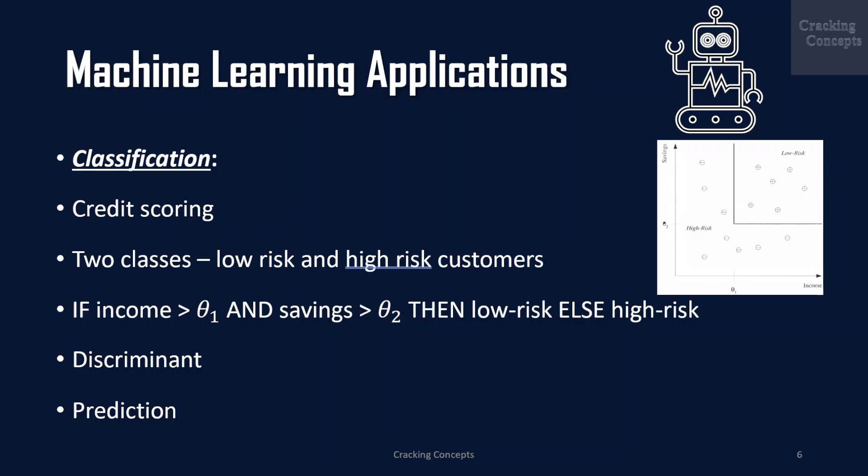Next we will look into classification. In credit scoring, the bank calculates the risk given the amount of credit and the information about the customer. Information about the customer includes data that is relevant in calculating his or her financial capacity, namely income, savings, collaterals, profession, age, past financial history, and so forth.